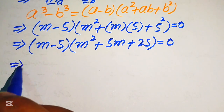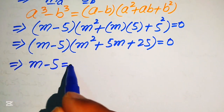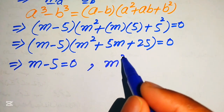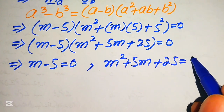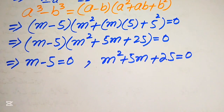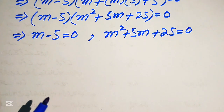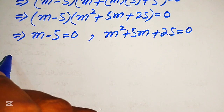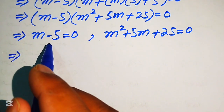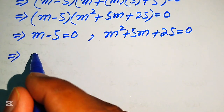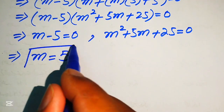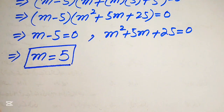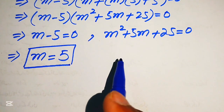Further simplification gives us m minus 5 times of m squared plus 5m plus 25 equals to 0. Now we divide this equation into two cases. The first case gives m minus 5 equals to 0, so m equals to 5. This is our first real root of the given equation. For the other roots, we need to solve the quadratic equation m squared plus 5m plus 25 equals to 0.